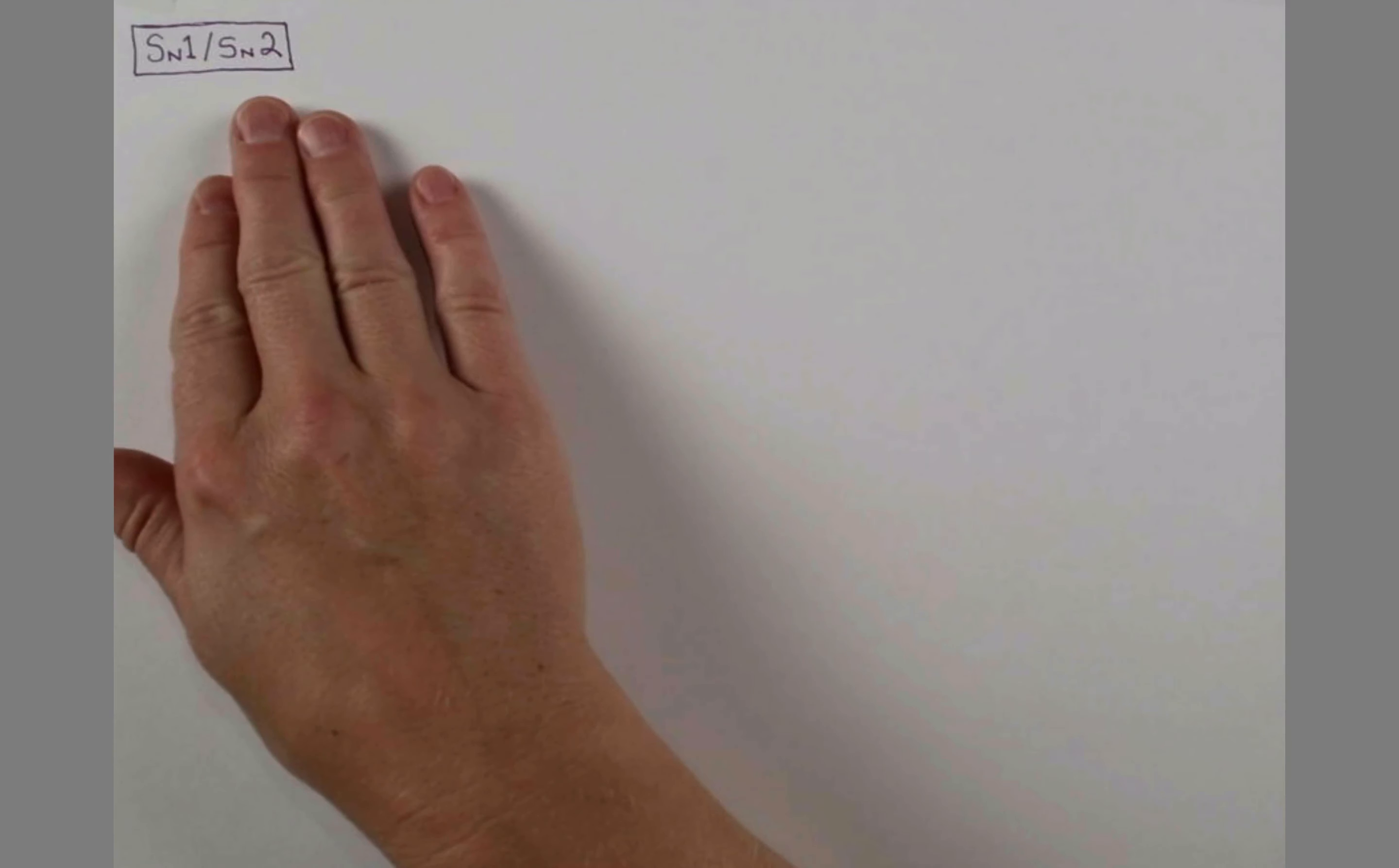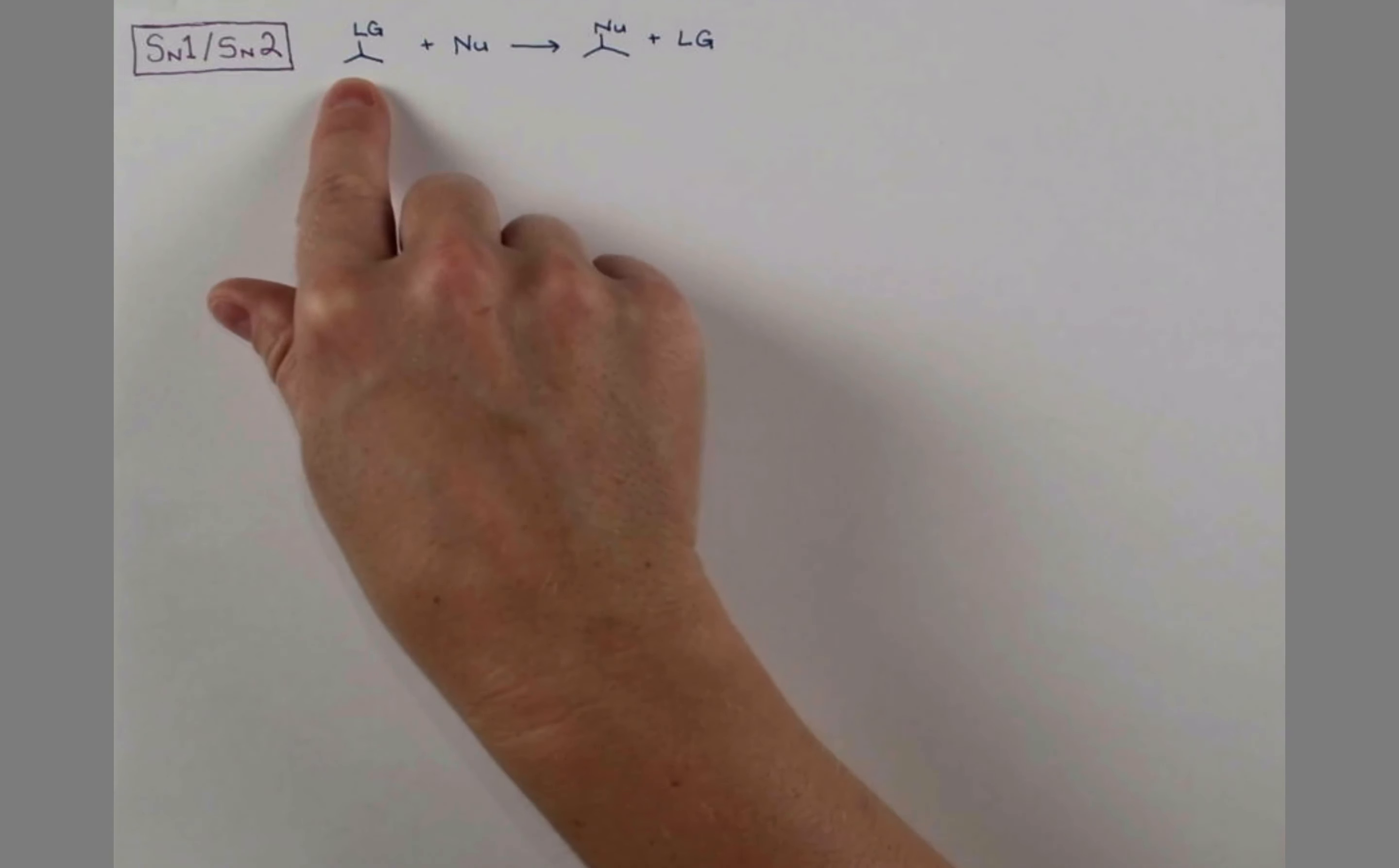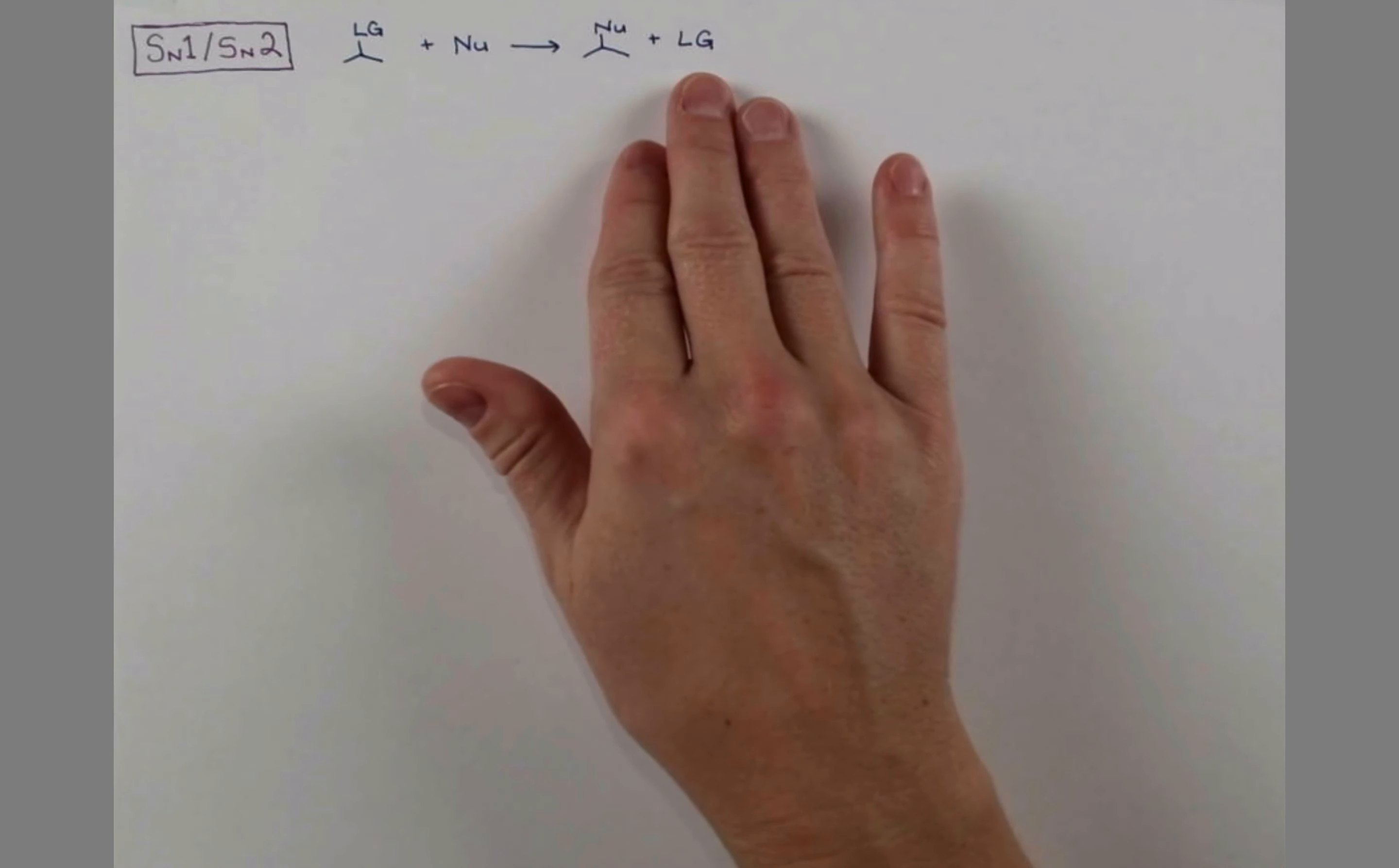SN1 and SN2 describe two different competing mechanisms for a substitution reaction. In general, the reaction looks like this. A compound containing a leaving group on an sp3 carbon reacts with a nucleophile, and essentially the groups switch places. The nucleophile adds to the organic molecule, and the leaving group is displaced.